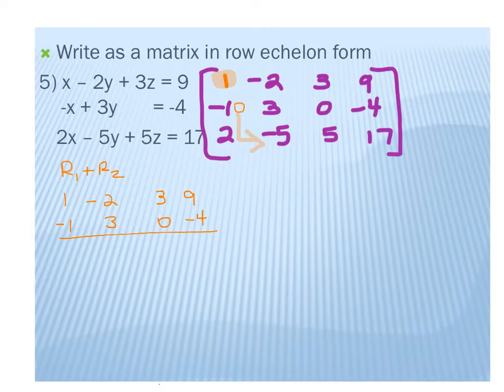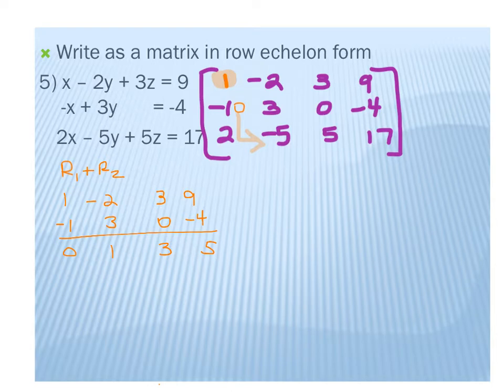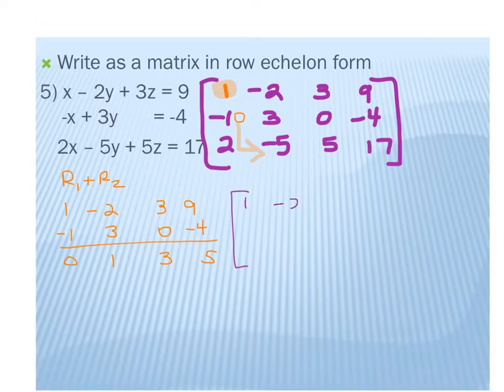Now row 1 is 1, negative 2, 3, 9. Row 2 is 0, 1, 3, 5. And row 3 is 2, negative 5, 5, 17. Now I want a 0 where the 2 is in row 3. I can't use row 2, so I use row 1. I'll do negative 2 times R1 plus R3: that gives negative 2, 4, negative 6, negative 18 plus 2, negative 5, 5, 17, which equals 0, negative 1, negative 1, negative 1. That replaces row 3.